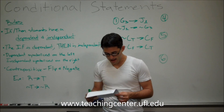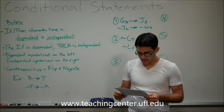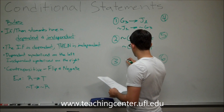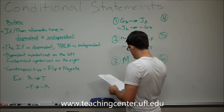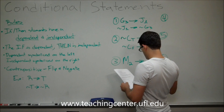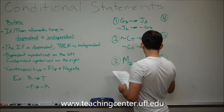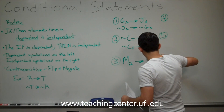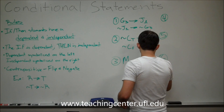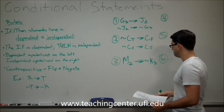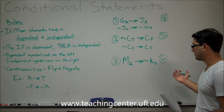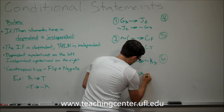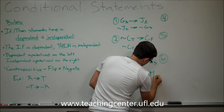For number three: if Mary leaves second, then Kathy does not leave third. Again, it's a straightforward if-then — M2 on the left side of the arrow, then not-K3 on the right. The contrapositive is: if Kathy leaves third, then Mary does not leave second.